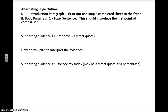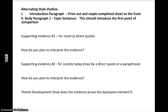Then your evidence from today's society — it can be a paraphrase of your own ideas. If you want to use an outside source to support, it could be a direct quote as well. Remember to cite that correctly if you use an outside source, something specific from a text. Then interpretation of that, explaining how it connects to the dystopian theme that you are supporting and proving, and then a closing sentence that ties the paragraph together. I'll talk to you more about that closing sentence when I show you an example.